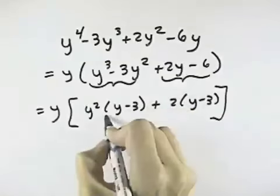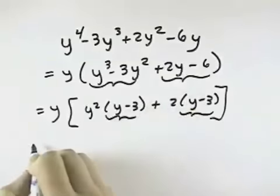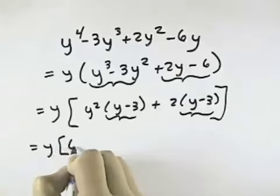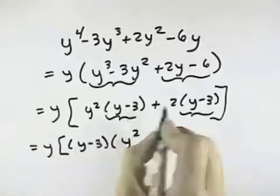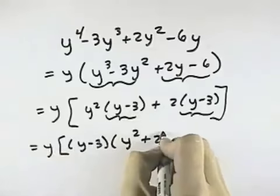We can see that grouping is going to work because we have the y minus 3 in common. So that means we pull the y minus 3 out, and when we do we have y squared left from our first term and a plus 2 in our last term.